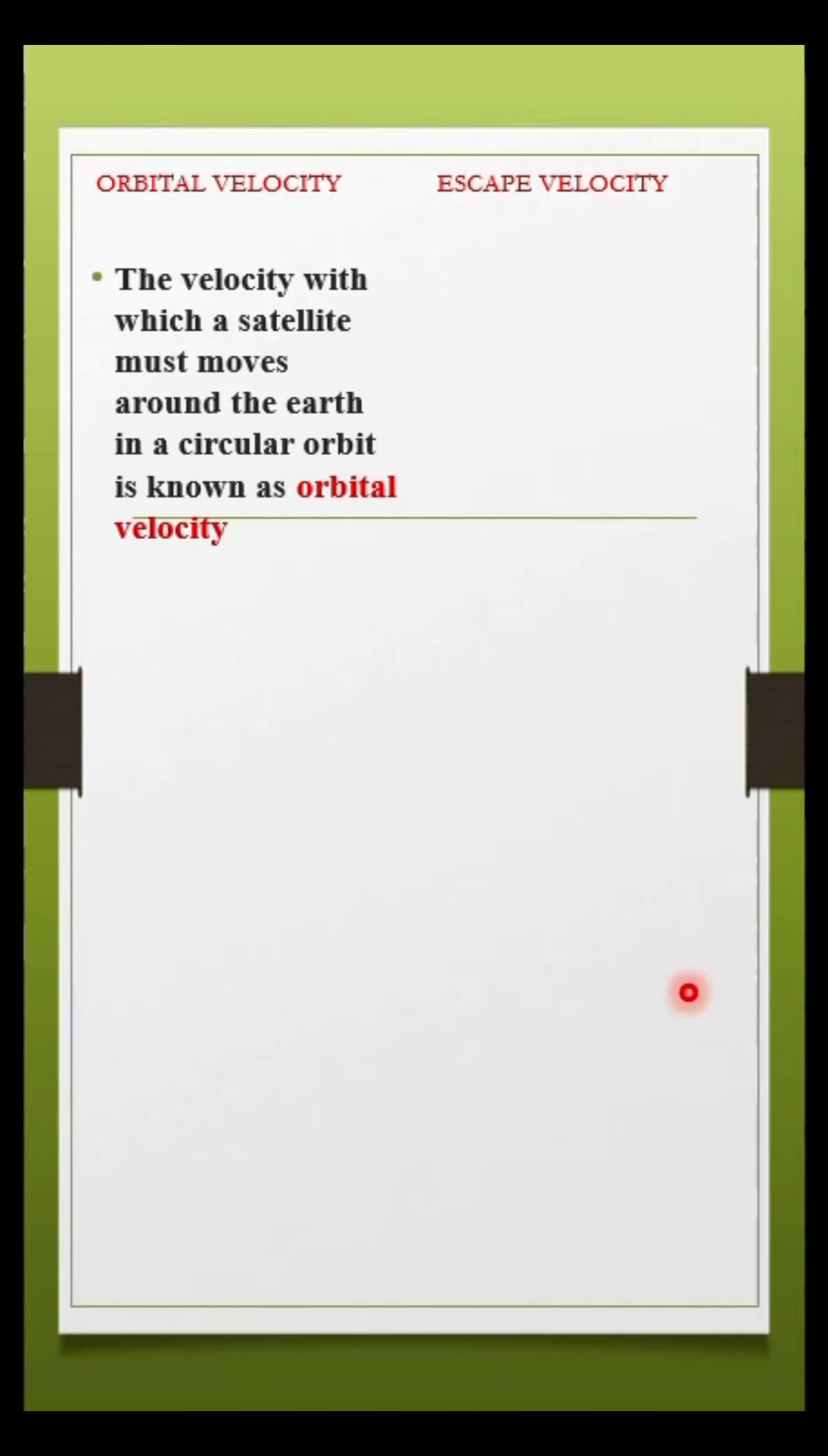Orbital velocity is the velocity with which a satellite must move around the Earth in a circular orbit. The formula is v₀ = √(GM/R).